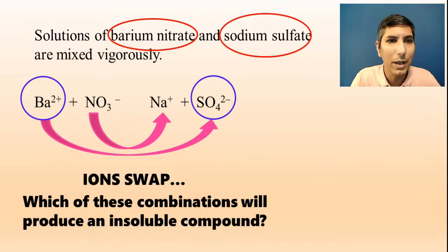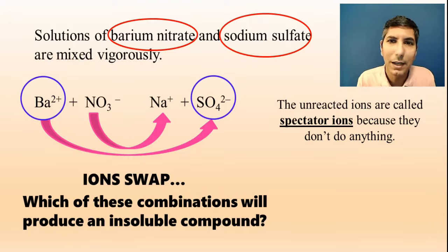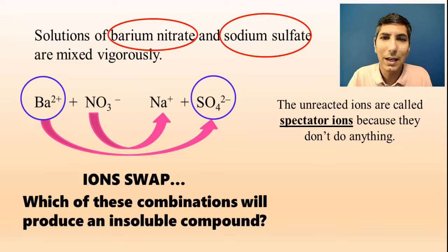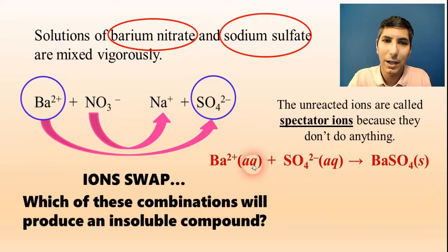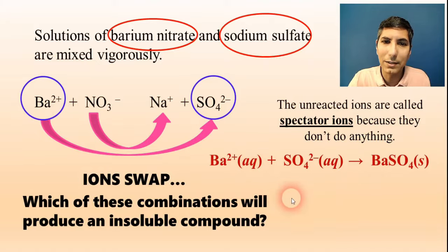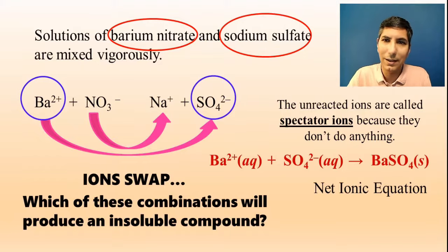Yes, you need to know those solubility rules. These other ions that don't do anything, we call those spectator ions — they're just sitting there, not participating in the chemical reaction. So the barium 2+ ions are going to react with the sulfate SO₄²⁻ ions, and when they get together, they're going to make barium sulfate. This is how you would write the overall equation for this process. This is called the net ionic equation, and it essentially omits the spectator ions, those ions that really aren't doing anything in the reaction.